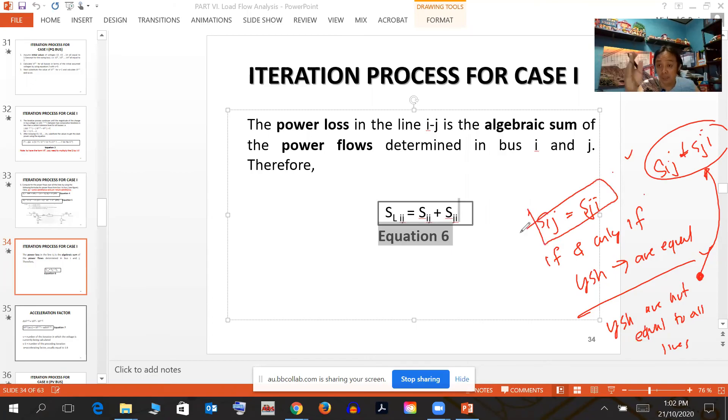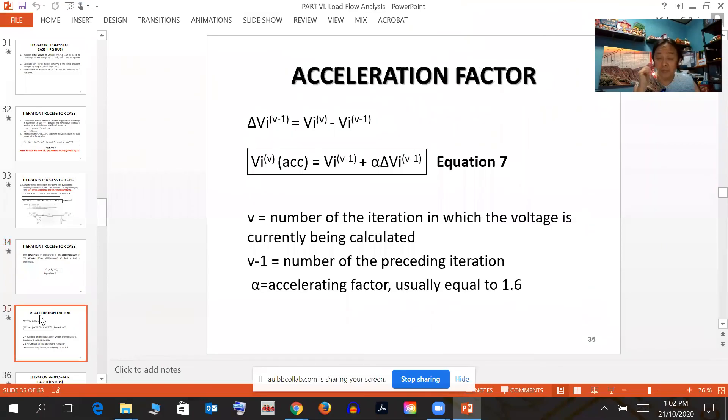If you multiply the bus voltage by I_ij, the answer is S_ij. You can now get S losses: S_ij plus S_ji. Please take note, S_ij will not equal S_ji if and only if your Y shunt values are equal for all lines. If Y shunts are not equal to all lines, S_ij is not equal to S_ji. S_ij plus S_ji equals the losses at that line.